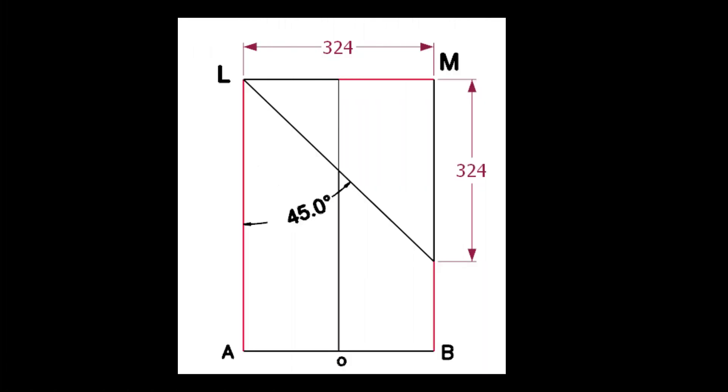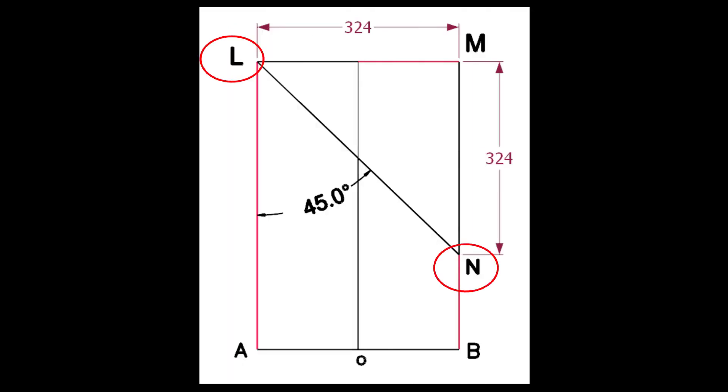Draw the lines AL and BM. Calculate the cutback of the miter. Since the including angle is 45 degrees, the cutback is same as the pipe OD. Draw the line LN.